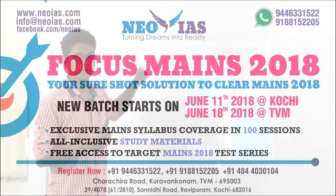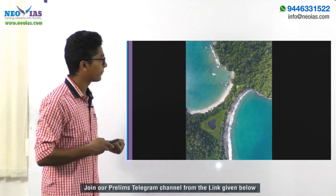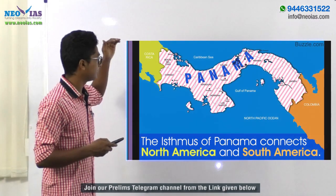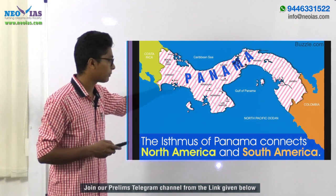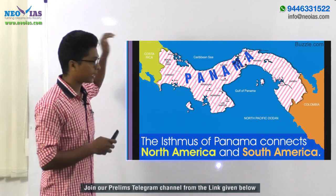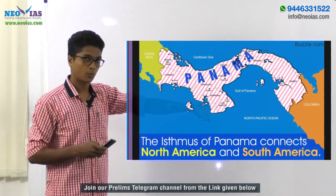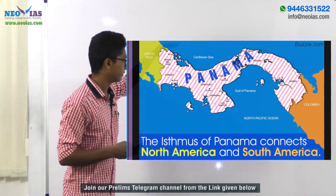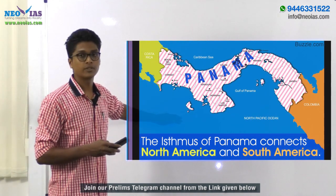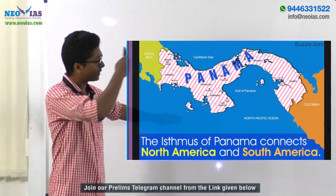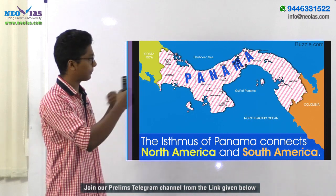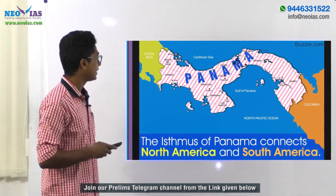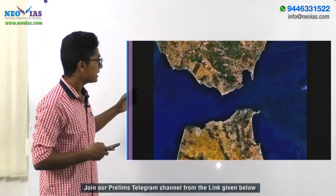An isthmus separates two larger water bodies and connects two landmass regions. One of the most famous examples is the Isthmus of Panama, which connects North America and South America and separates the Atlantic Ocean from the Pacific Ocean.